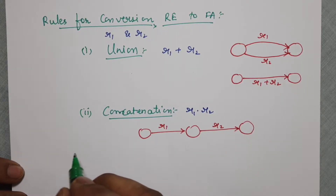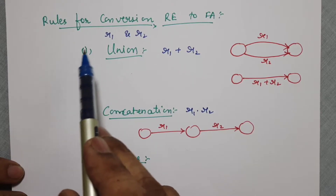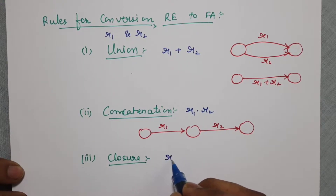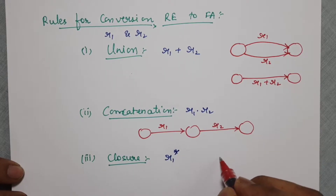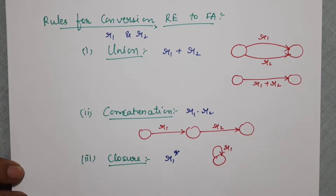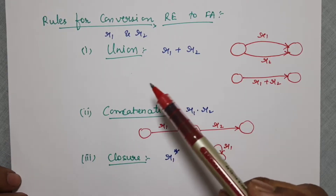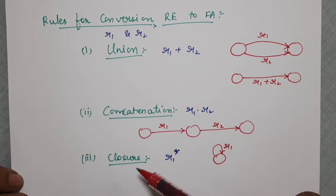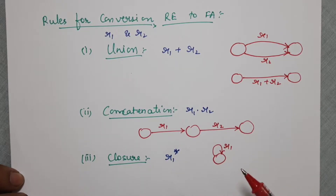The third rule is closure. If you have a regular expression R1 and want to write closure of R1, you write it as R1 star, which is indicated by a self-loop. We are going to use either of these three rules for converting a given regular expression to its equivalent automata.